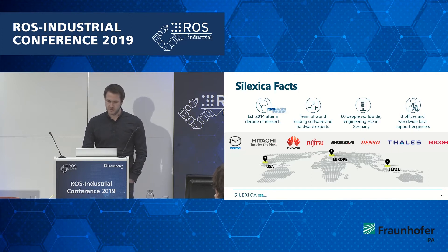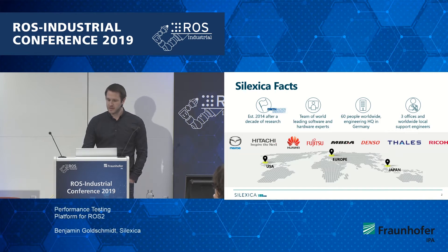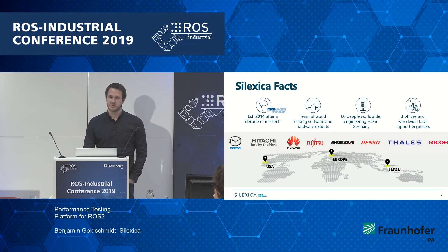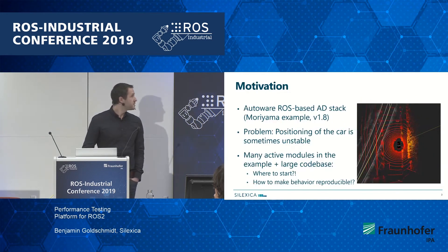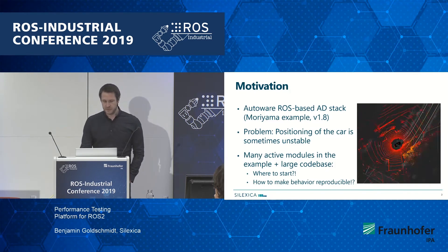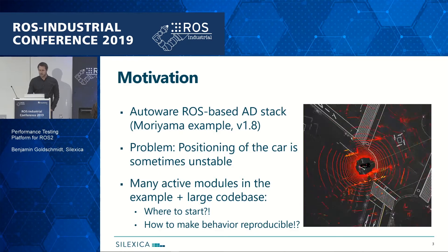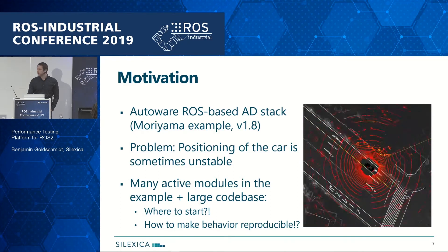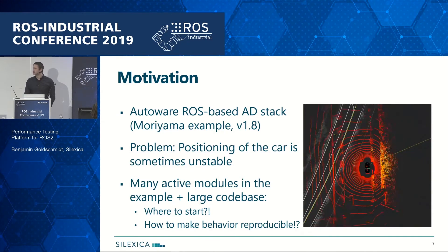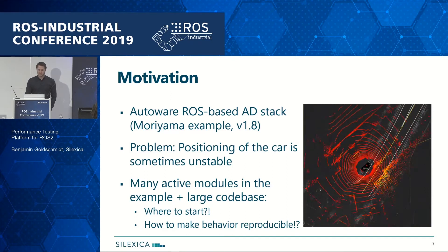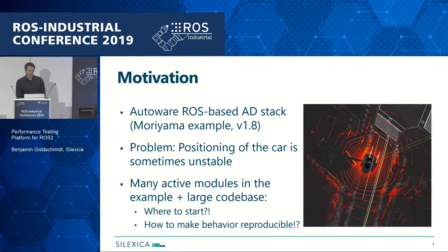One of the tools that we have is this platform. Before I introduce it, I want to spend some time on a motivation — a real-world example to show you that this is actually a problem that people in the field have today. I brought an example from the Autoware Auto or Autoware AI ROS-based autonomous driving stack. It's open source and is actually used in real cars in Japan.